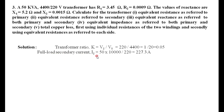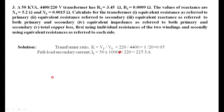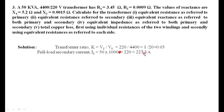The full-load secondary current is calculated as kVA rating divided by secondary voltage, that is 50,000 divided by 220, giving 227.3 amperes. The primary current I1 is then found using I1 equals k times I2, giving 0.05 times 227.3 equals 11.36 amperes.